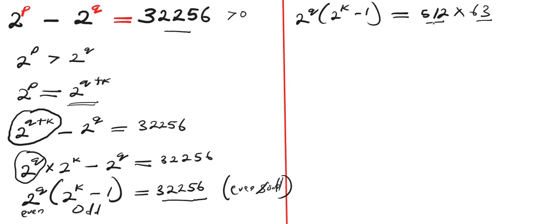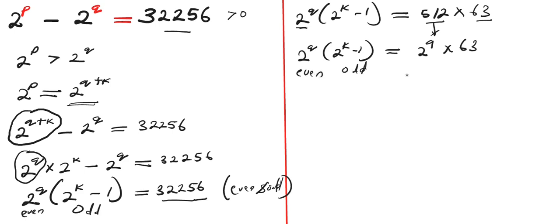The next step is to change 512 into its exponential form so as to correspond with our equation. We have 2 to the power of q times 2 to the power of k minus 1, equals 2 to the power of 9 times 63. Since 2 to the power of 9 equals 512. Now we can compare: even equals even, odd equals odd. Comparing the even parts, 2 to the power of q equals 2 to the power of 9, so q equals 9.